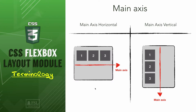When the main axis is horizontal, we have a main size, and it is considered as the width of the flex items. In the opposite, if the main axis is vertical, the main size will be the height of the items. The main axis always has a start and an end.